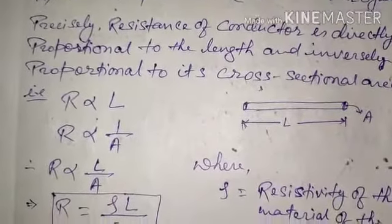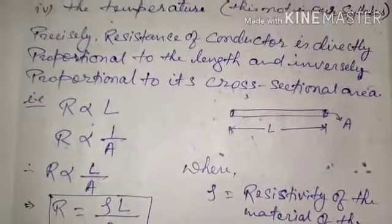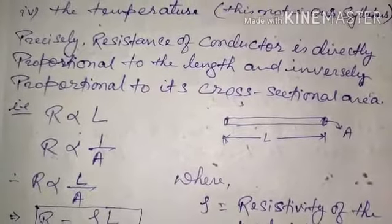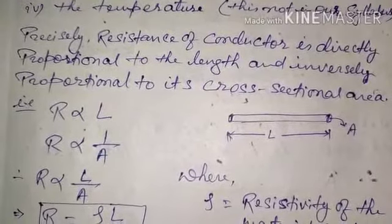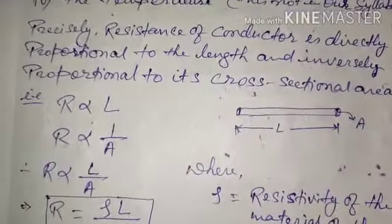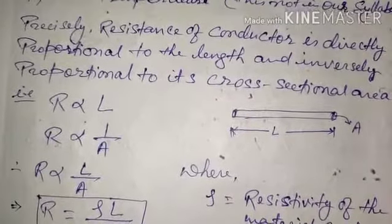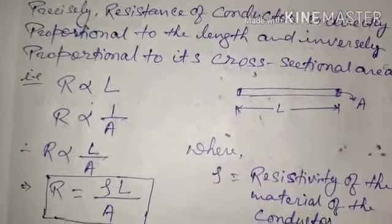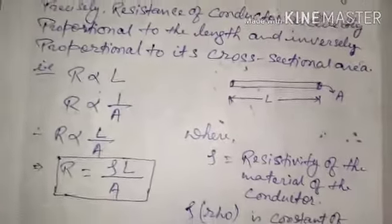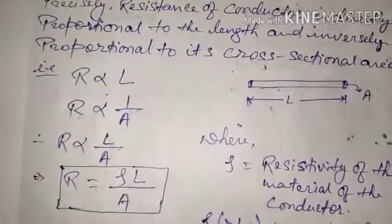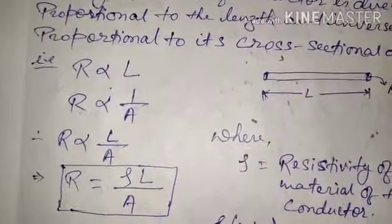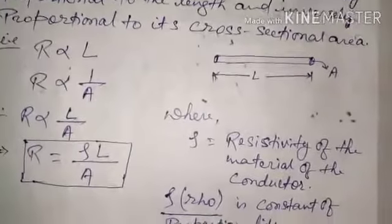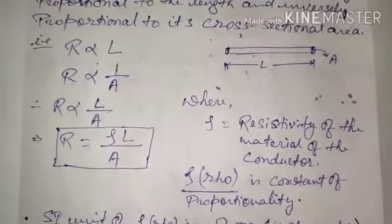Precisely, the resistance of a conductor is directly proportional to the length and inversely proportional to its cross-sectional area. If the length increases, resistance also increases; if length decreases, resistance also decreases. For cross-sectional area it is the opposite: if area increases, resistance decreases, and if area decreases, resistance increases. It is an inverse proportion — one increases, the other decreases.